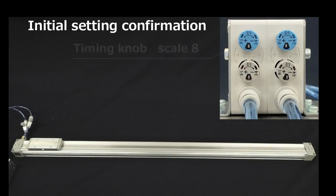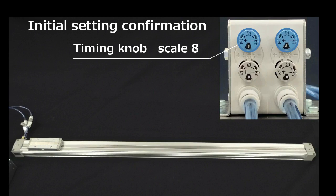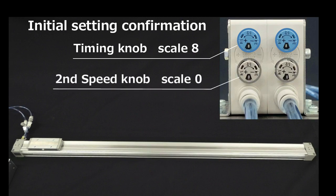The blue timing knob, which adjusts the deceleration position, should be at position 8. The grey second speed knob, which adjusts the second speed, should be at position 0.